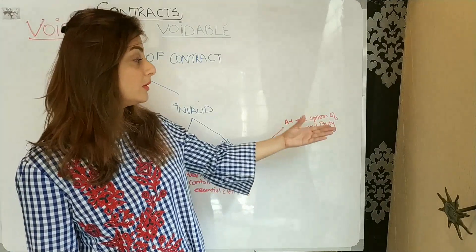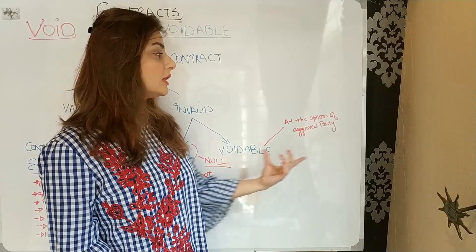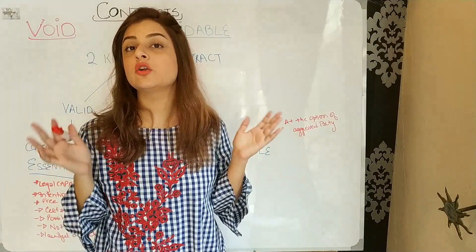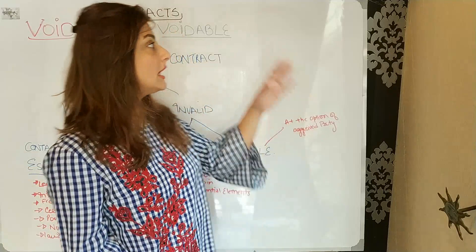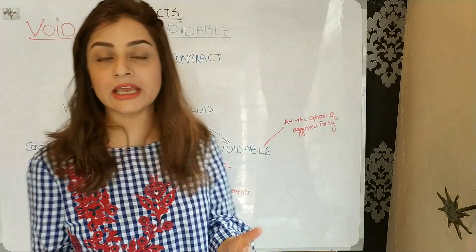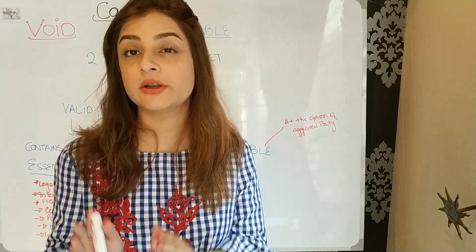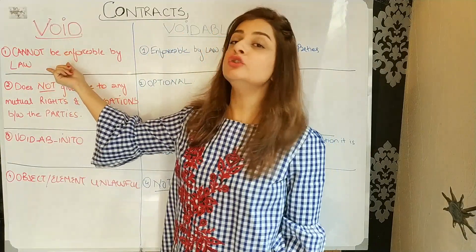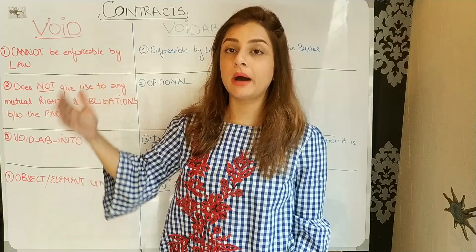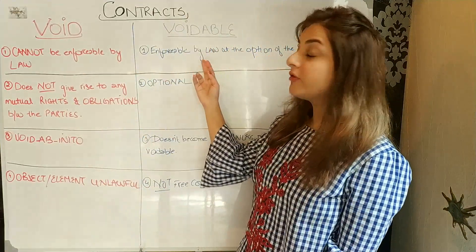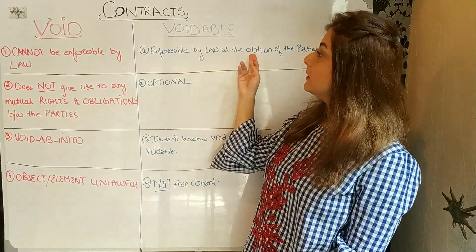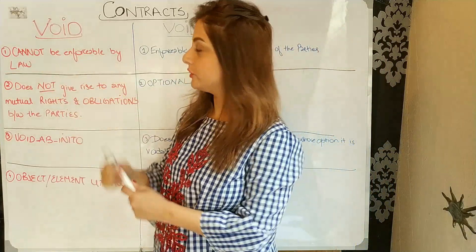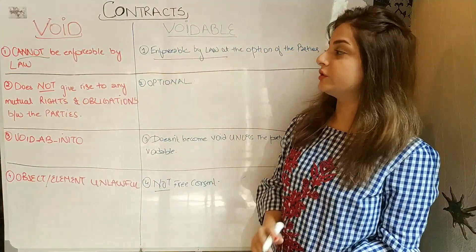What is a voidable contract? A voidable contract is one which is at the option of the aggrieved party — it can be voidable, so it can be enforceable at law or it can be not. Void contracts are not enforceable by law. Voidable contracts are enforceable by law at the option of the parties — they are enforceable but at the option of the parties, so it can also not be enforced.